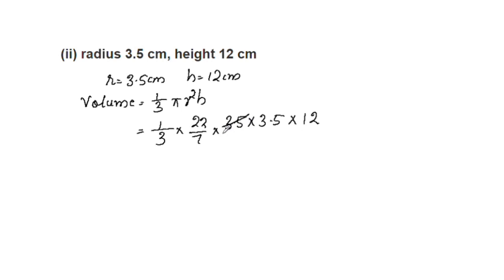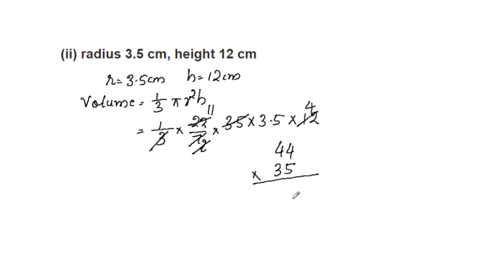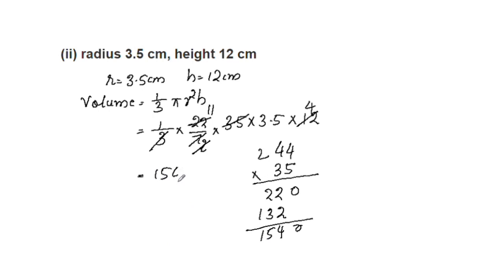We convert 3.5 to 7/2, so 3.5 × 2 = 7. We cut 22 to 11 and simplify. 3 goes into 12 giving 4. Working through the multiplication: 11 × 14 = 154. The volume is 154 cm³.